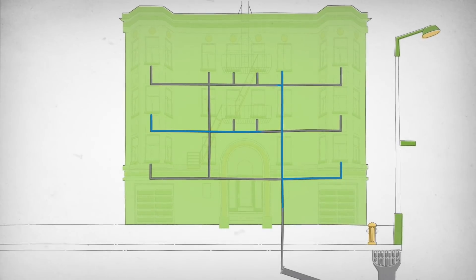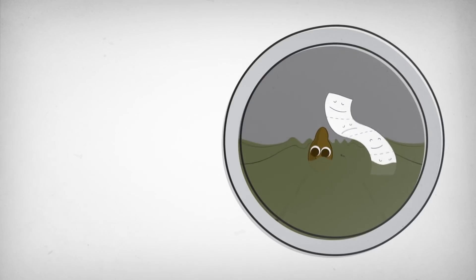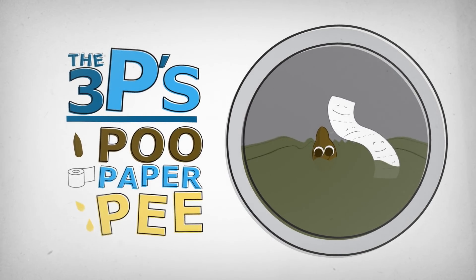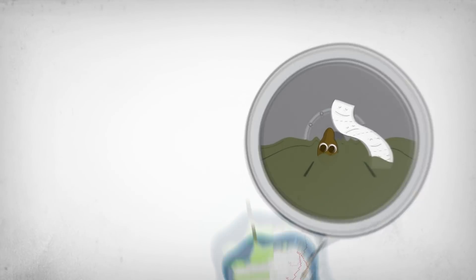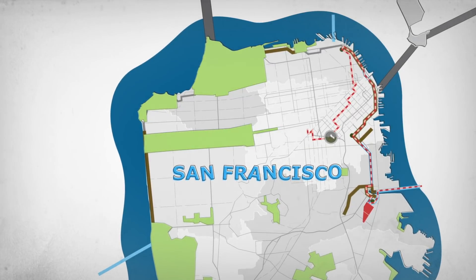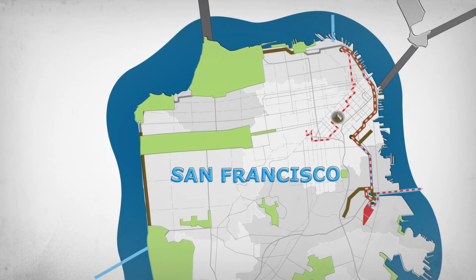First it goes down the drain through the building, and then poo goes into the sewer system along with the other two P's: paper and pee. The sewer system is like an underground maze throughout San Francisco, and everything in the sewer in my neighborhood is heading to the same place, the Southeast Treatment Plant.